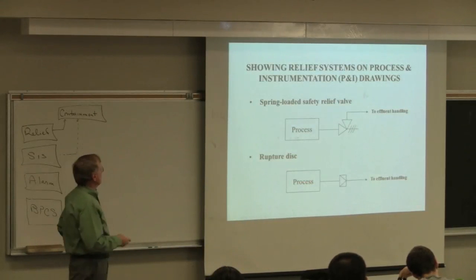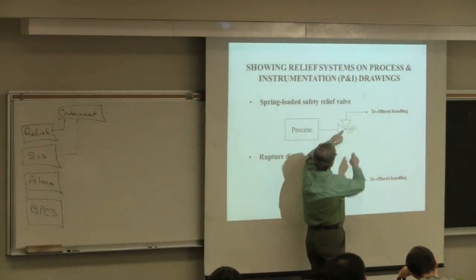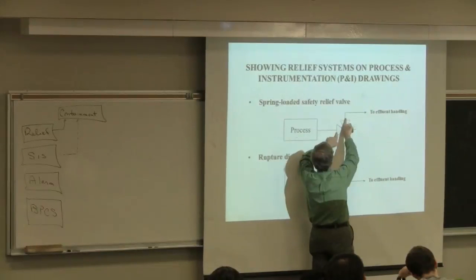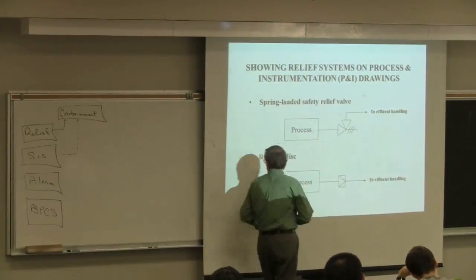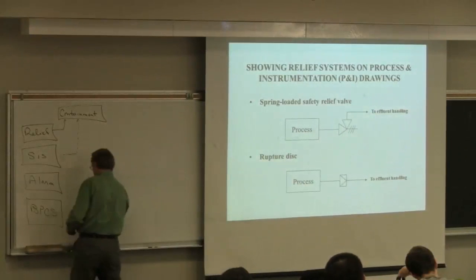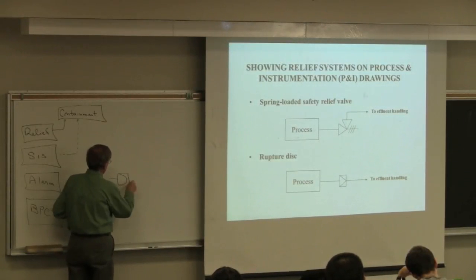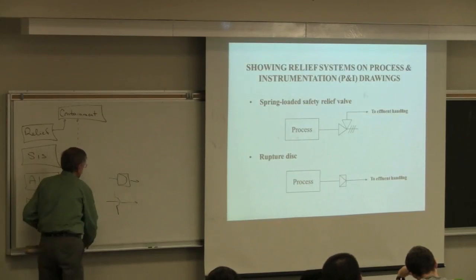How do we show these on P&ID diagrams? The safety valve symbol represents the spring—it's an angle valve that changes direction 90 degrees. For the rupture disk, there are several different symbols used; sometimes it's shown one way, sometimes another. There are many different symbols for the rupture disk.